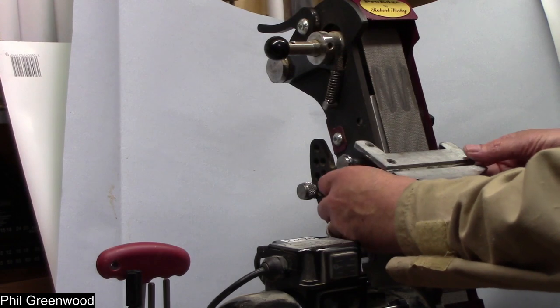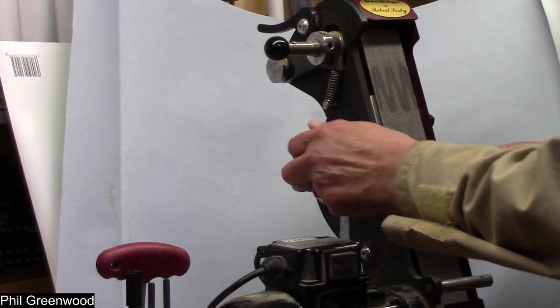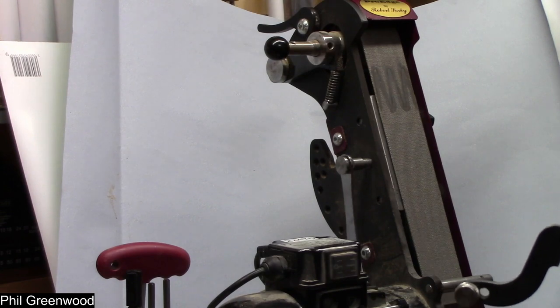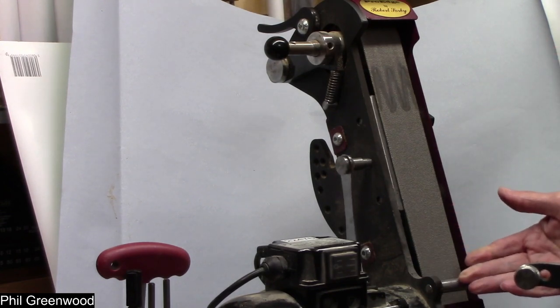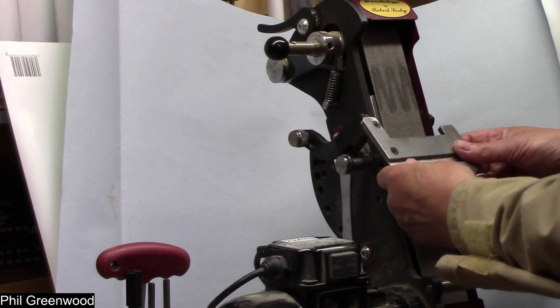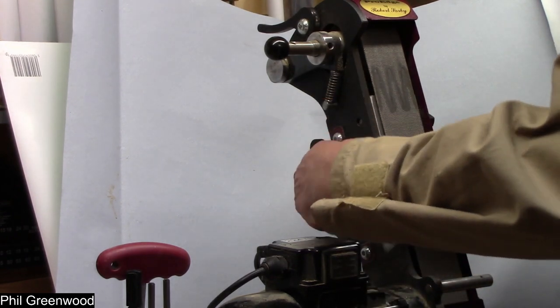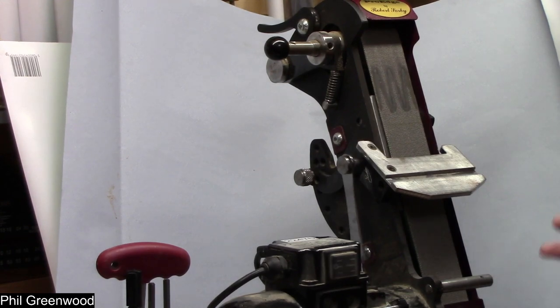All I need to do is give that roughly one turn and it lifts away, as easy as that. Sharpen my bowl gouge, spindle gouge. Put that back on, line it up with the slot I want at the back. It's now quick and easy.